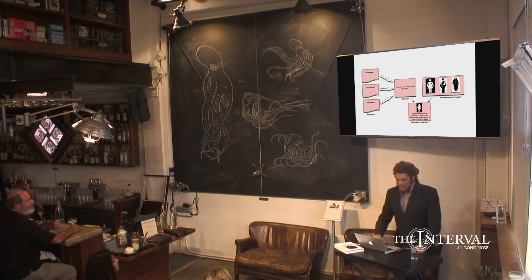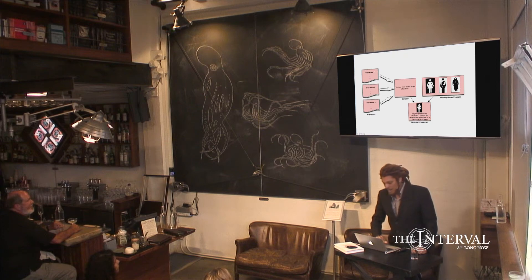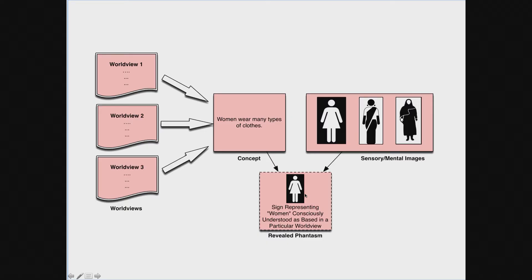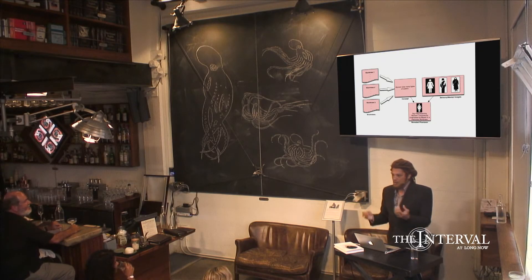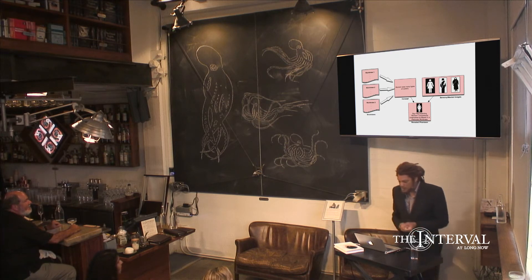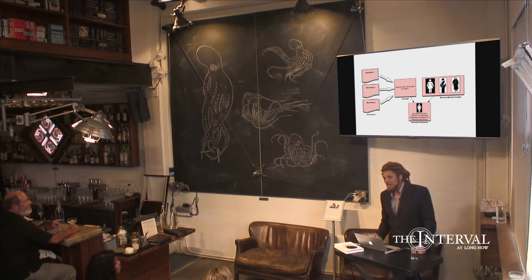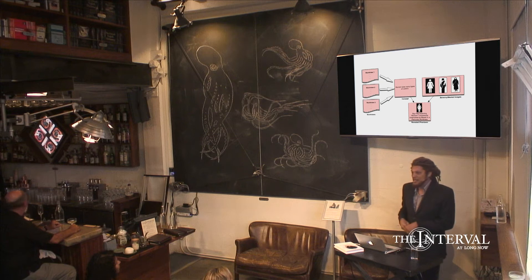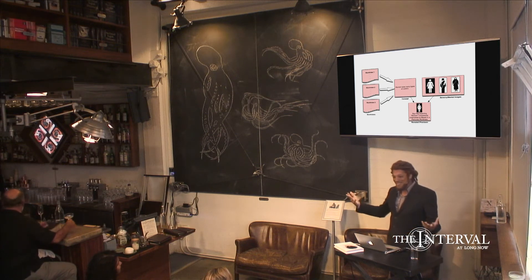So the idea is that when we begin to look at this sign from multiple worldviews, some of the biases and intrinsic beliefs built into the original one begin to be revealed — and that's what I'm calling a phantasm. It's a kind of semi-visible execution of a worldview through the sensory-mental image that we're encountering out there in the wild, so to speak. Because you could have thought this is somebody wearing a kilt, somebody wearing a cape, something like this.